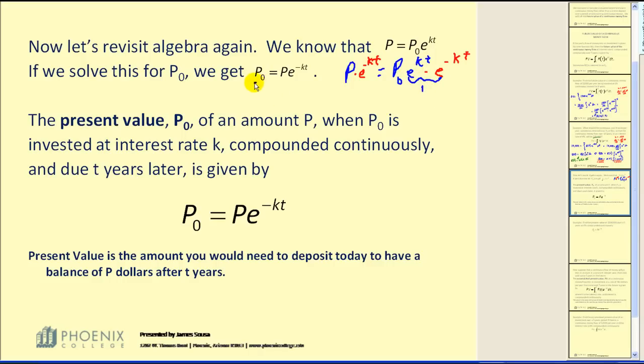So therefore we have this formula. Well, P₀ or P naught is referred to as the present value of an amount P, when P₀ is invested at interest rate k compounded continuously and due t years later. Present value is the amount you need to deposit today to have a balance of P dollars after t years.